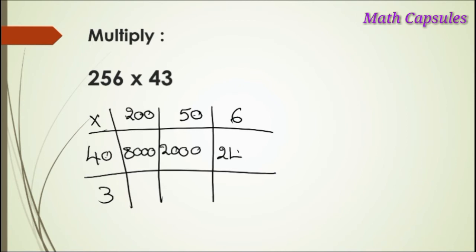200 times 3: we know that 2 times 3 is 6, and we have 100. 50 times 3: we know that 5 times 3 is 15, and one zero. And 6 times 3 is 18.